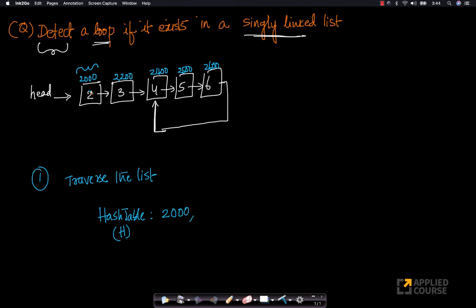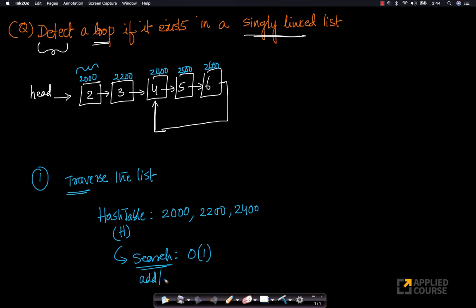I'll first store address 2,000. Then I encounter 2,200 — I check if 2,200 is already present in my hash table. It's not present, so I add it. The reason we use a hash table is that the time complexity to search is O(1), and the time complexity to insert a new value is also O(1).